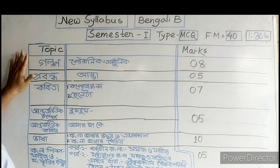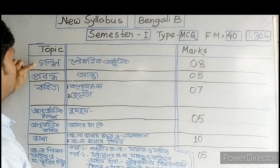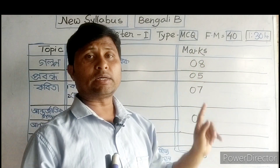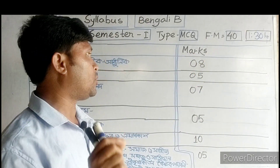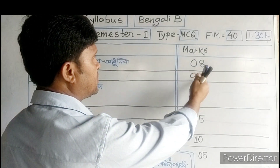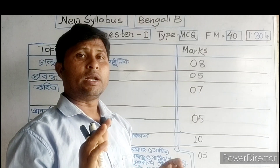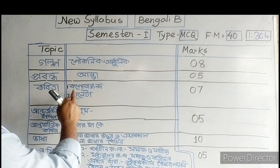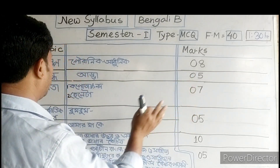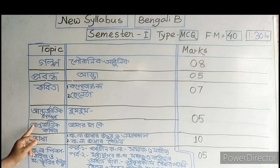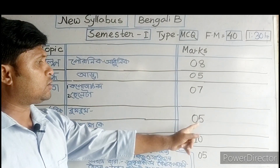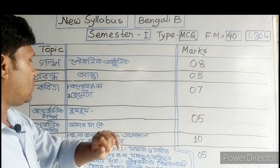you will be able to get a number of 8 MCQ types, and you will be able to get a number of 5 MCQ types. In November, you will be able to get a number of 7 MCQ types, and a number of 5 MCQ types.